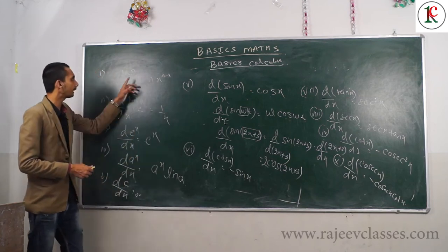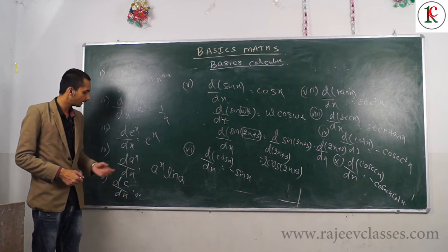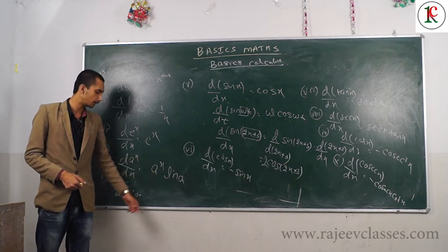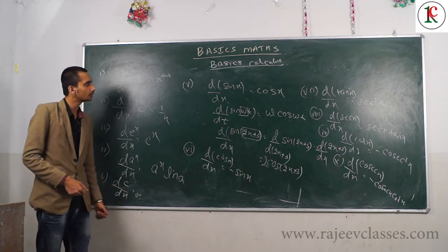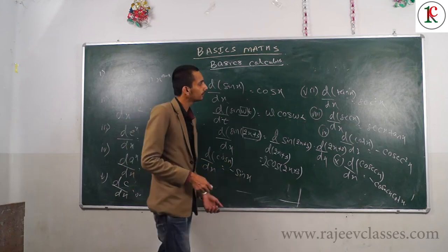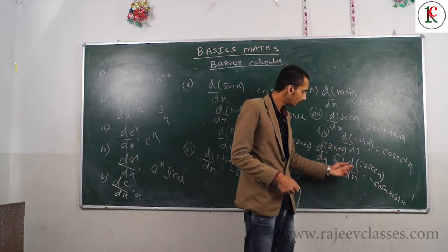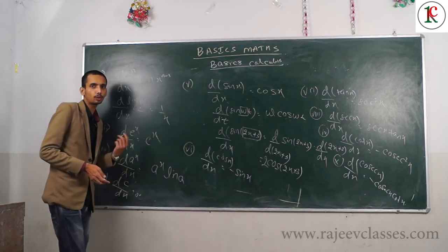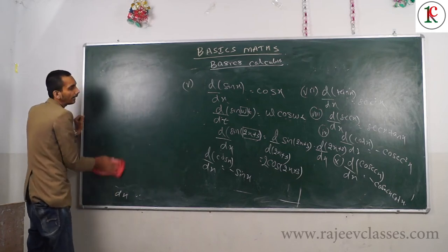Let me summarize the key formulas: X power n gives n times X to the power (n-1). Log X gives 1/X. e to the power X gives e to the power X. a to the power X gives a to the power X times ln a. Constant differentiation is zero. Sin gives cos, cos gives minus sin, tan gives sec squared X, cot gives minus cosec squared X.